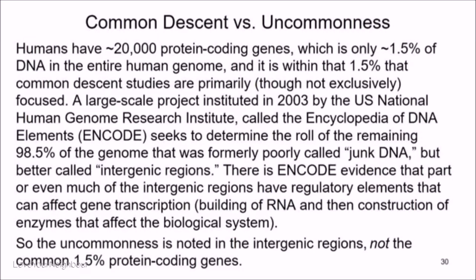A large-scale project was instituted in 2003 by the U.S. National Genome Research Institute — a federal organization — called the Encyclopedia of DNA Elements, or ENCODE. It seeks to determine the role of the remaining 98.5% of the genome, formerly called junk DNA. They no longer call it junk; they call it the intergenic regions or intergenic DNA. ENCODE evidence shows that part or much of the intergenic regions have regulatory elements that can affect gene transcription — so they're not junk.